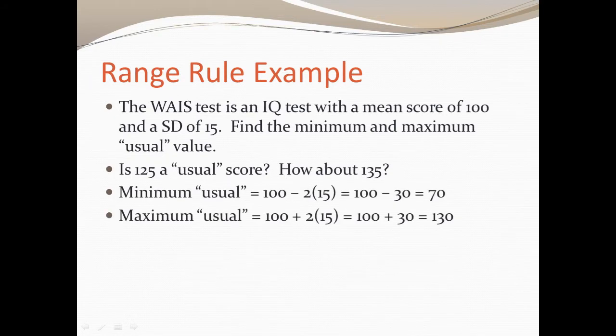The minimum usual value will take two standard deviations below the mean. So we take the mean 100 and subtract two standard deviations, two times 15, which is 30. So 100 minus 30 gives my minimum usual value of 70. The maximum usual value will be in the other direction. We want to add two standard deviations to the mean, and that gives 100 plus 30, which is 130.